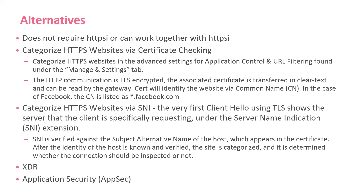Some alternatives — if we don't do HTTPS inspection, what can we do? You don't have to do it. You can actually use categorization of websites with certificate checking. Even though the information is encrypted, we can see that the common name of the certificate is listed. So we can potentially identify based on those URLs in the certificate what is actually a friendly website.